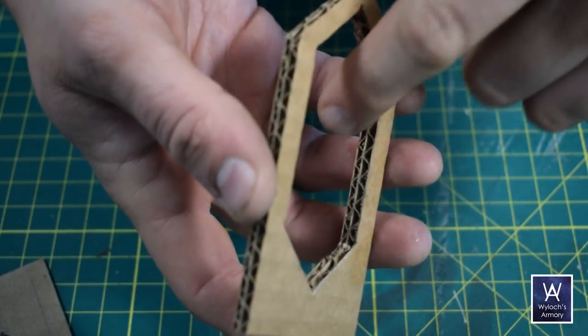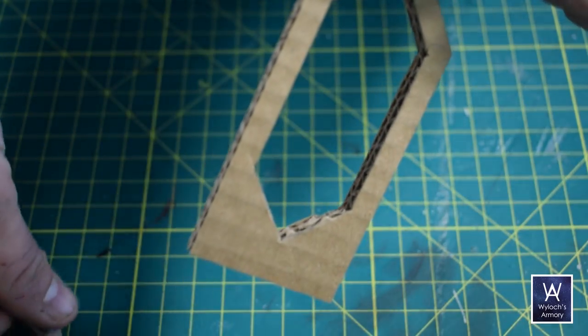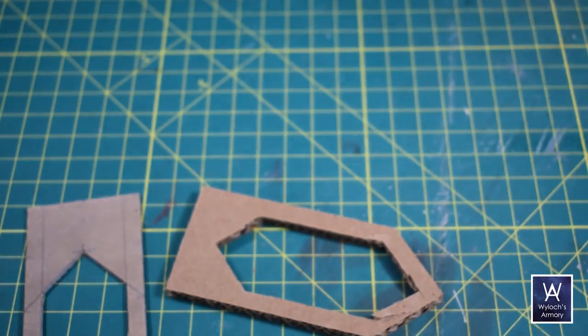Remember, we used that double corrugated because it's a quarter inch thick, and that's how thick our tile walls are. Therefore, we know the clip-on will fit nice and snug.